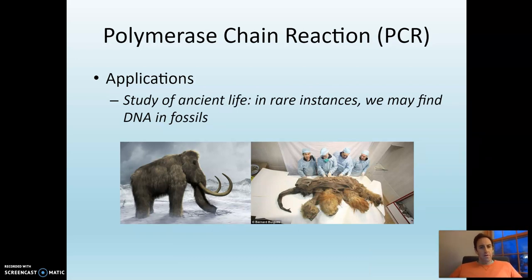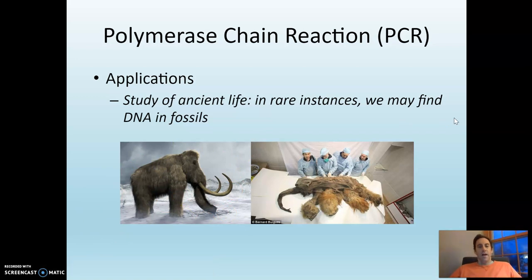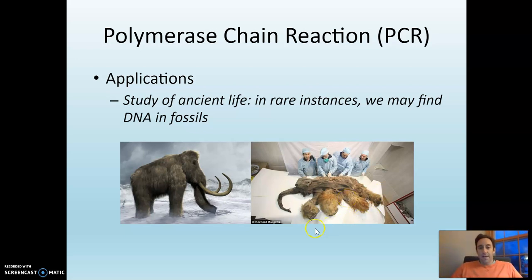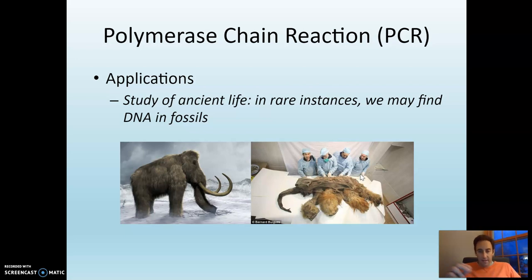We can also study ancient life. There have been rare instances where actual DNA from extinct species has been found — the woolly mammoth is a great example. The woolly mammoth lived during the Ice Age, about 10,000 years ago. Carcasses in places like Russia have been frozen since then, basically preserved in the freezer. They've actually found frozen mammoth carcasses from which they've been able to extract DNA — which is pretty amazing. You can apparently even order mammoth meat and try a bite, though it probably doesn't taste great after 10,000 years.